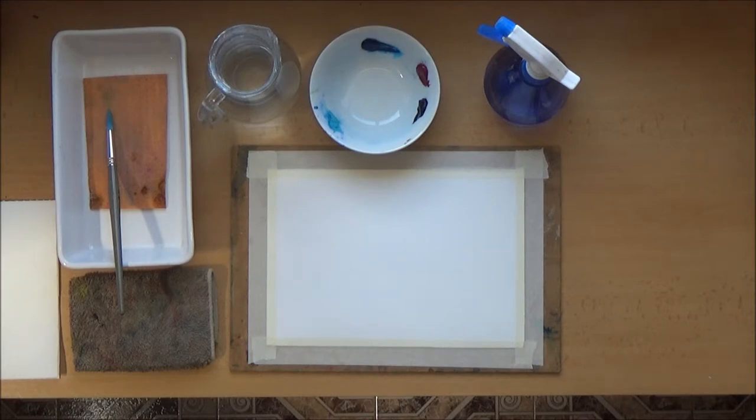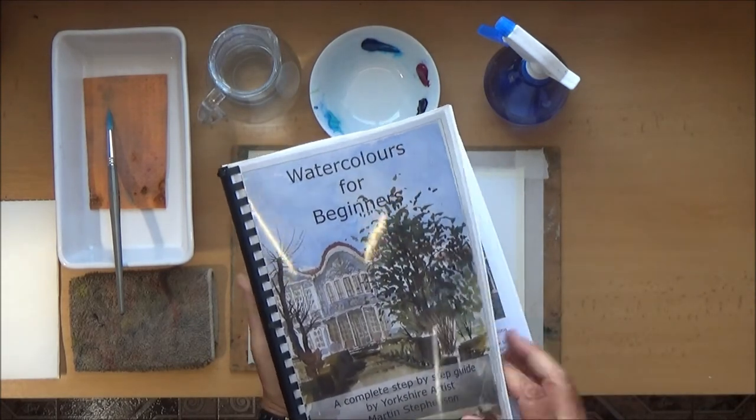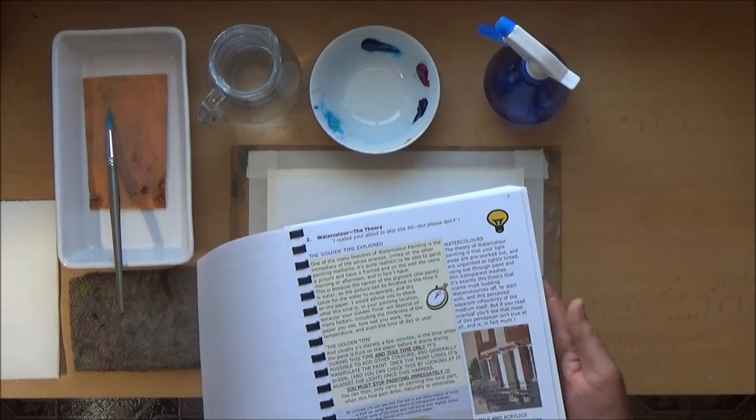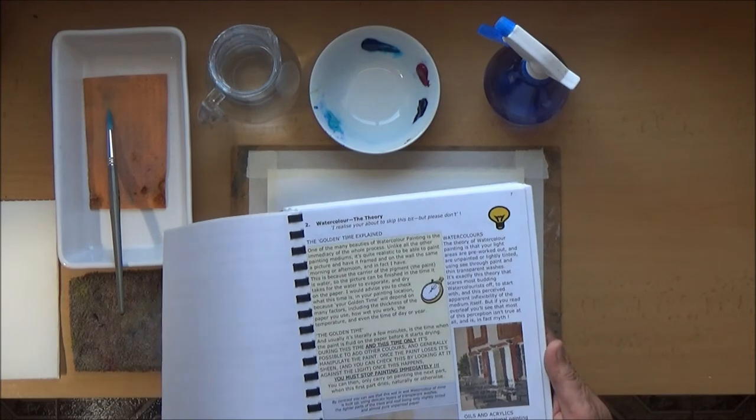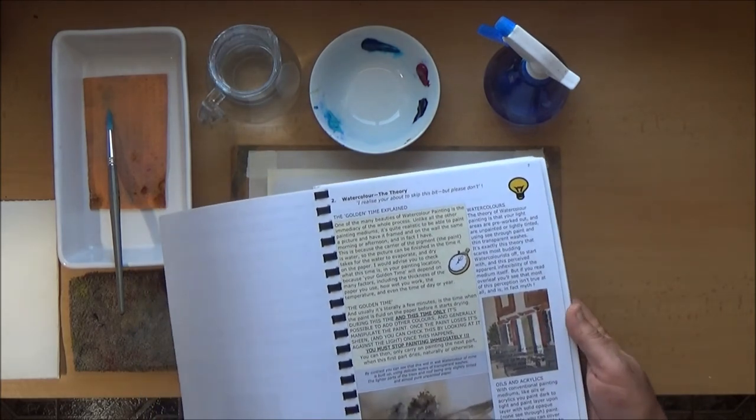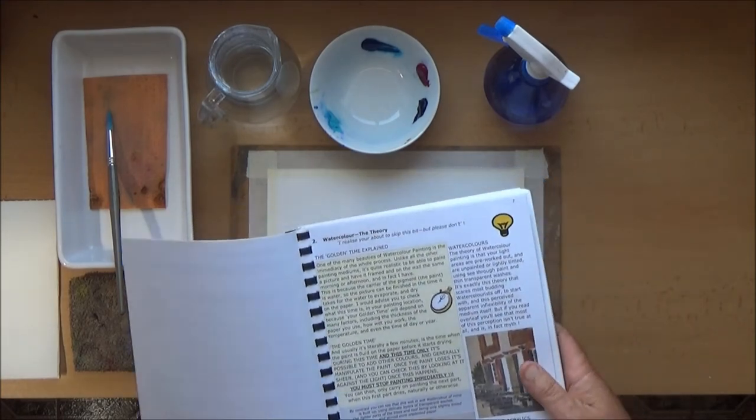In my e-book, which is called Watercolours for Beginners, there's a page seven, and it's called The Golden Time Explained. I can't emphasize that if you read no other page in my book, and it's free to download, just read page seven, and all will be revealed.